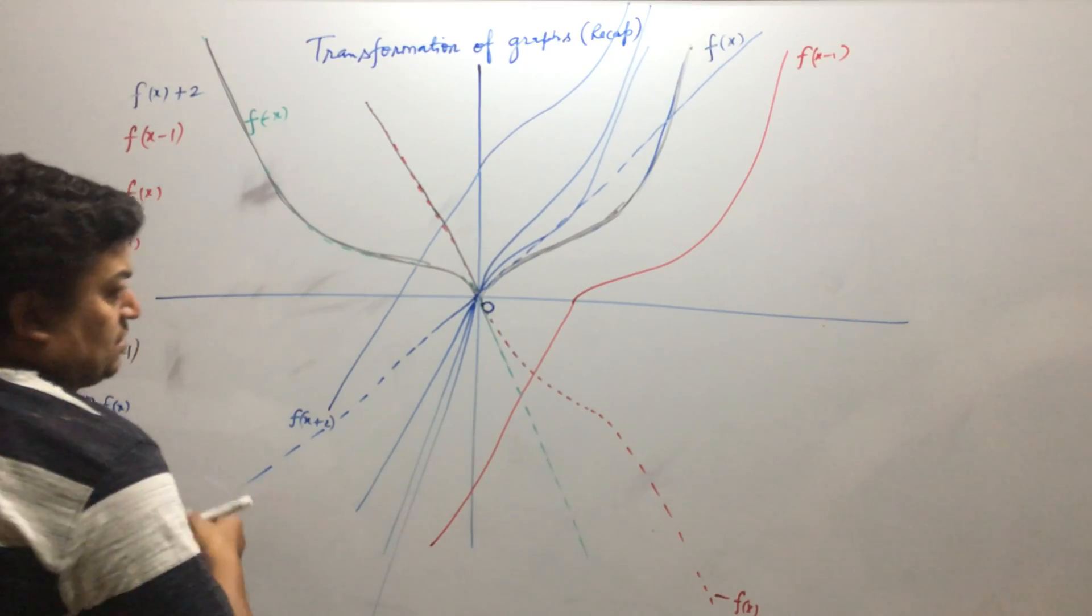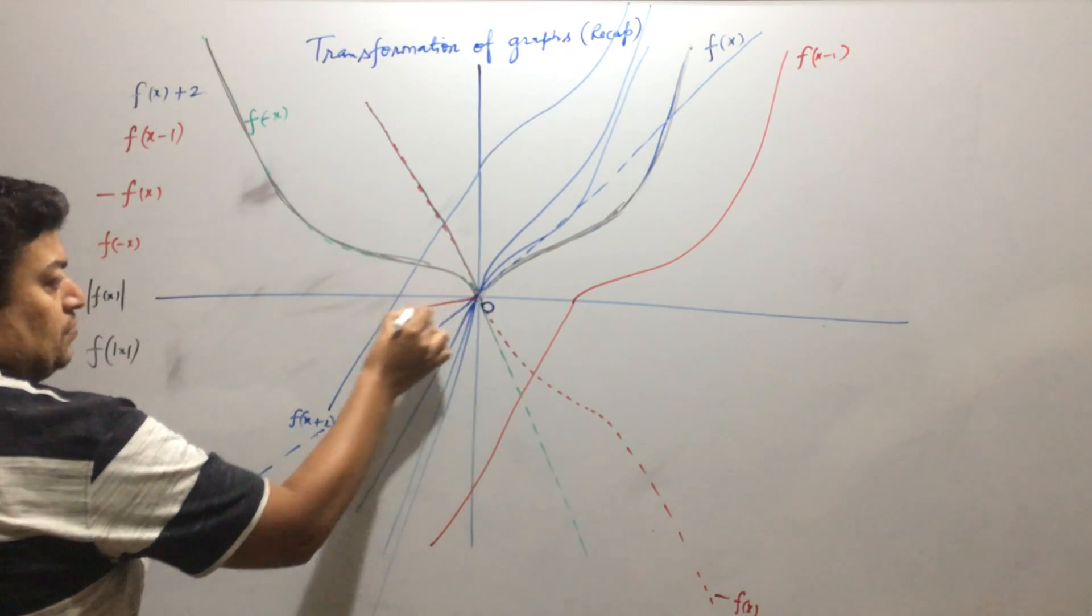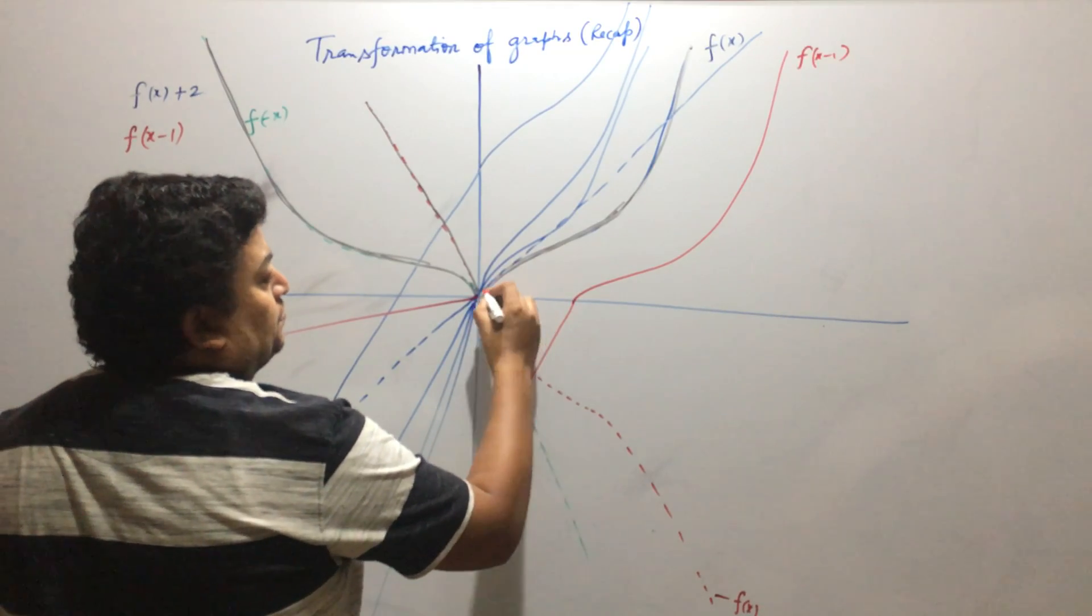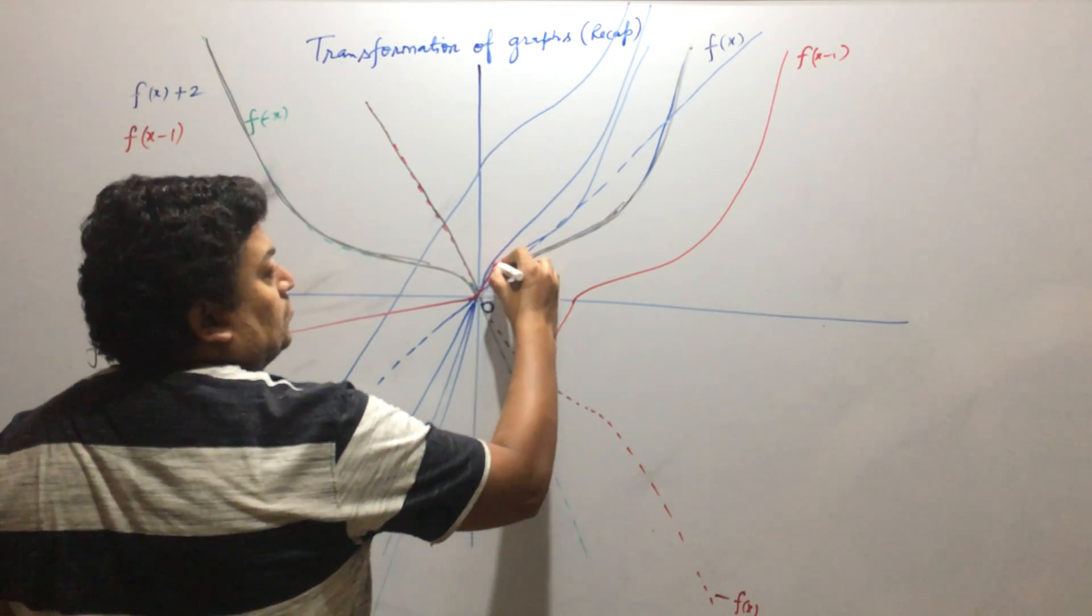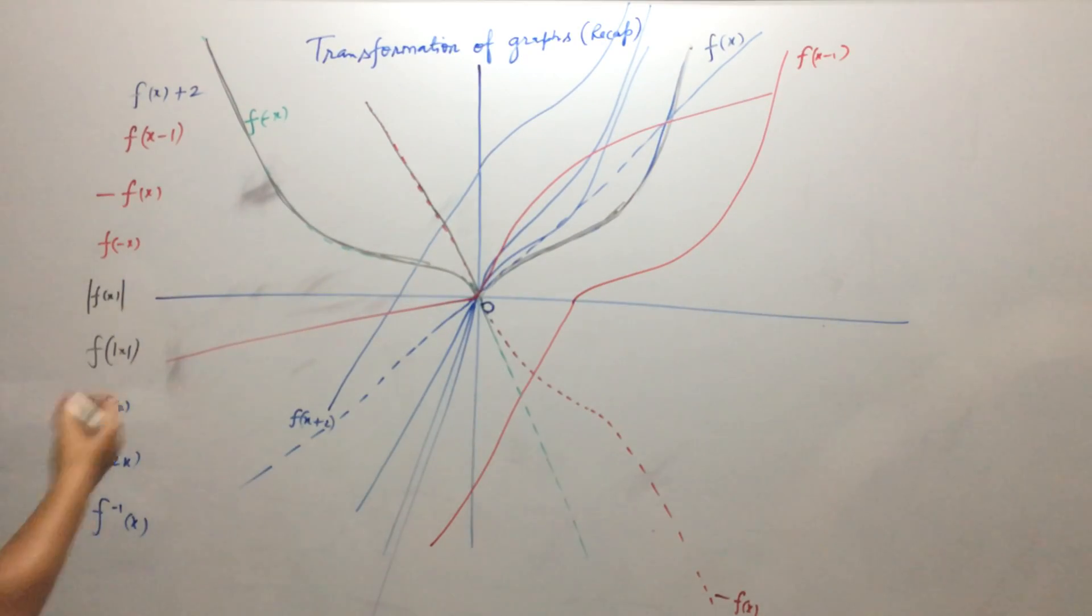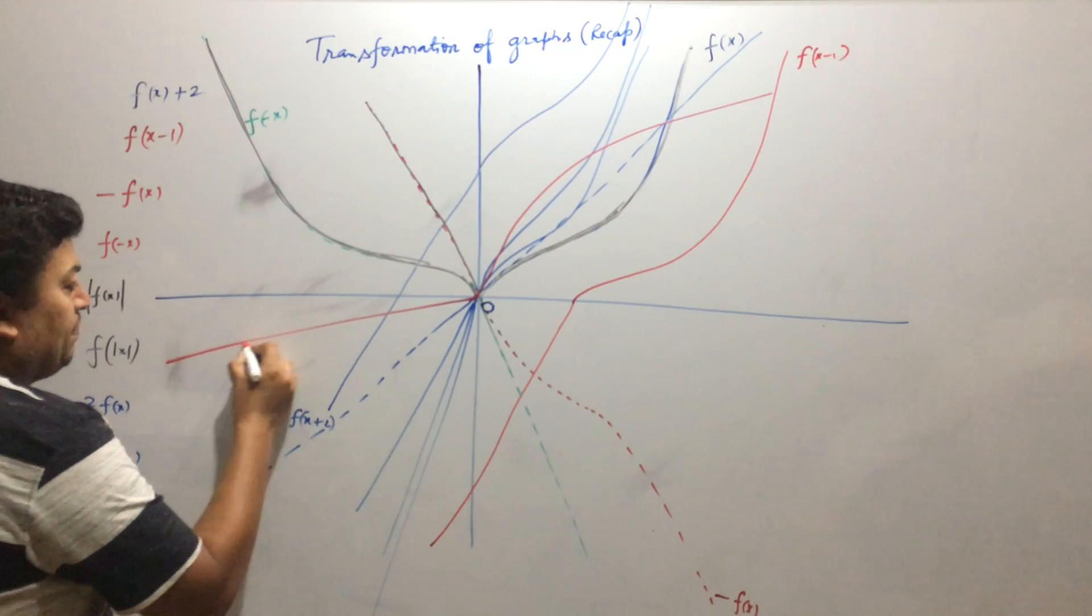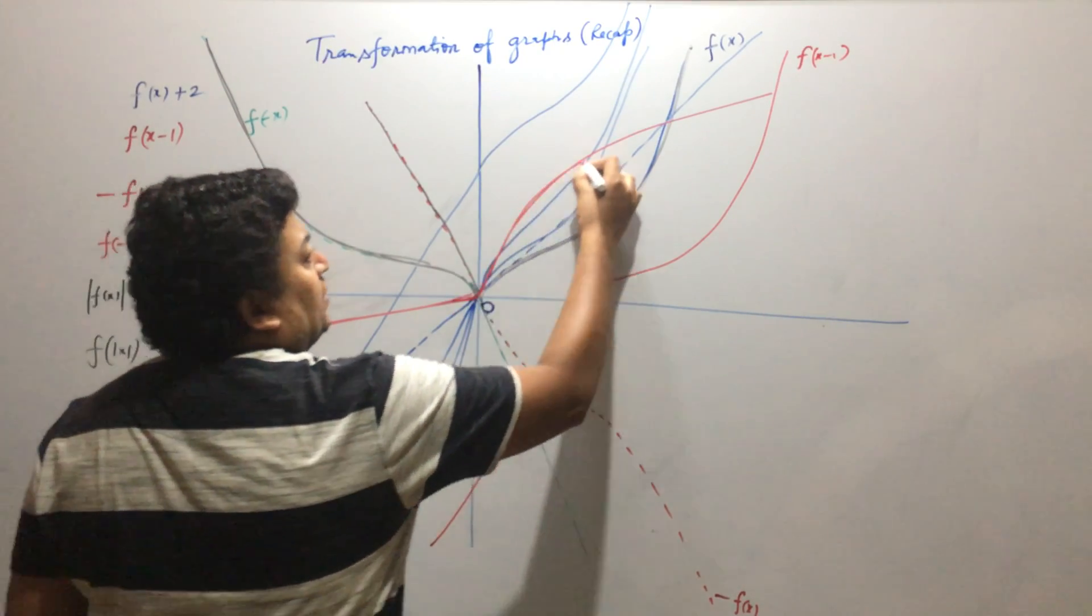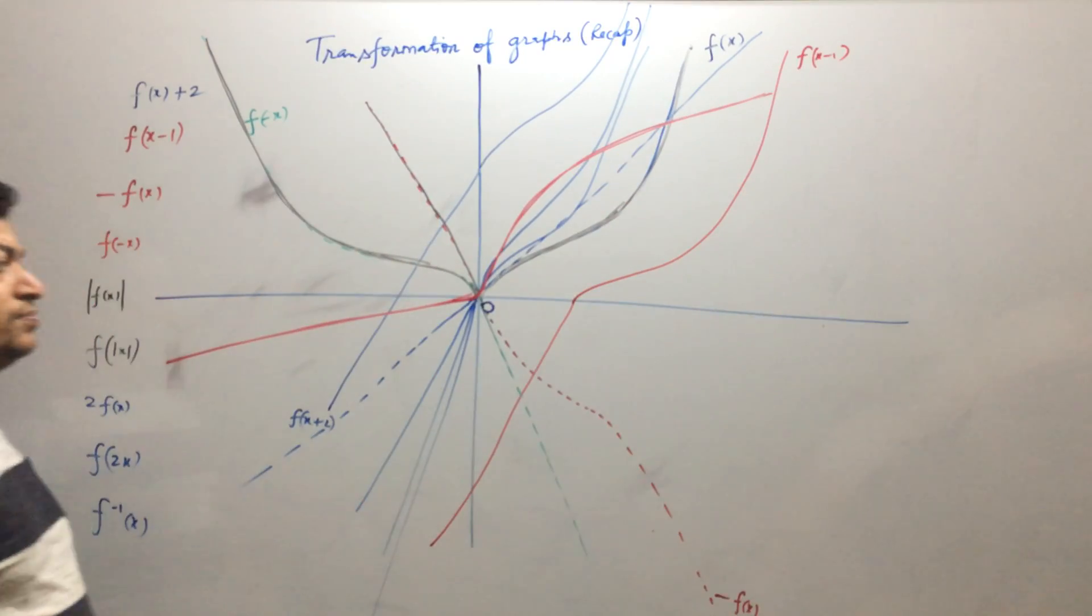So the mirror image will look like this. I know it's very crowded but if you see the movement of my pen and you remember the original graph you can understand. So that is the graph of f inverse x.